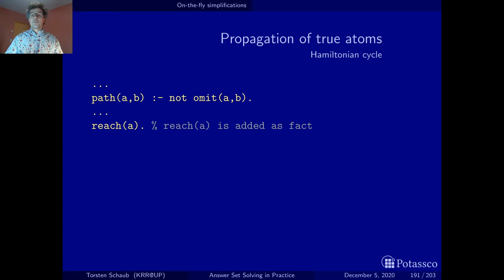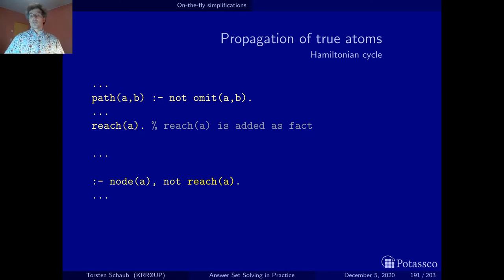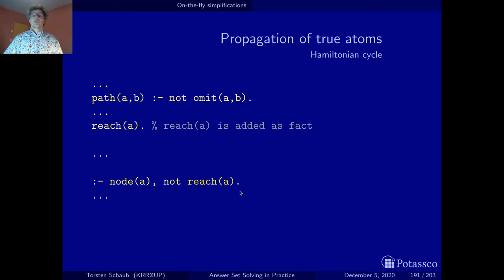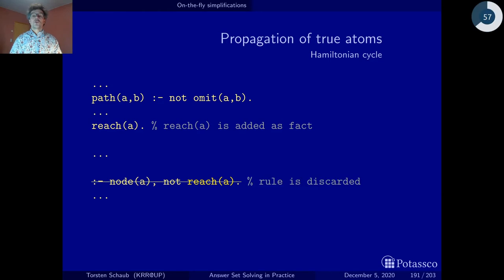Accordingly, we can now do further simplifications with this new true atom. There is an integrity constraint saying that each node must be reachable. We can drop this integrity constraint for A since we know A is reachable. Specifically, reach(A) has become true, so the negative literal not reach(A) is false. Since the precondition is now false, we can drop the integrity constraint — it has no effect and doesn't need to be grounded. It is no longer a constraint on our problem.